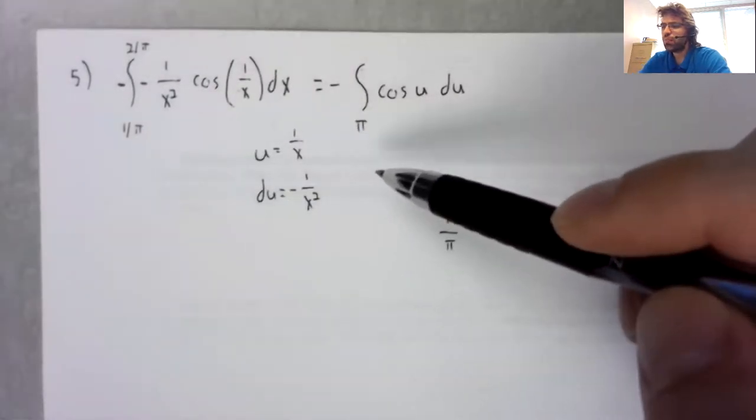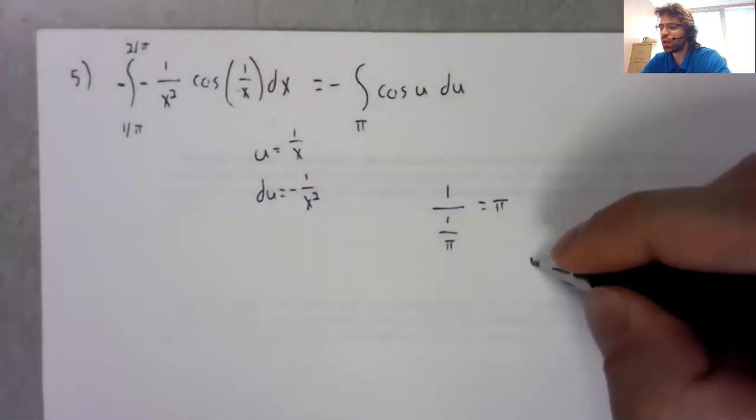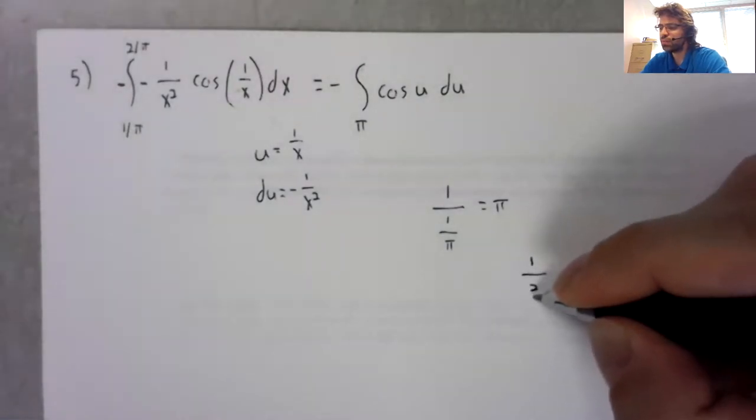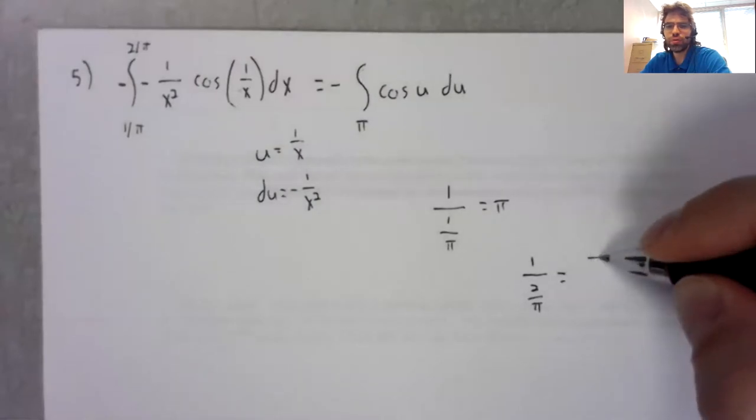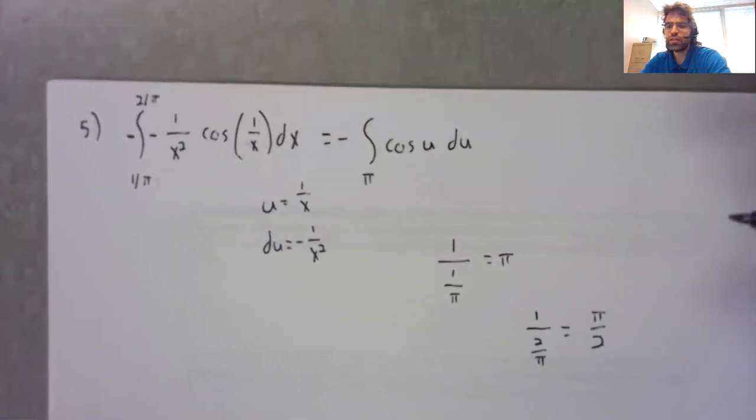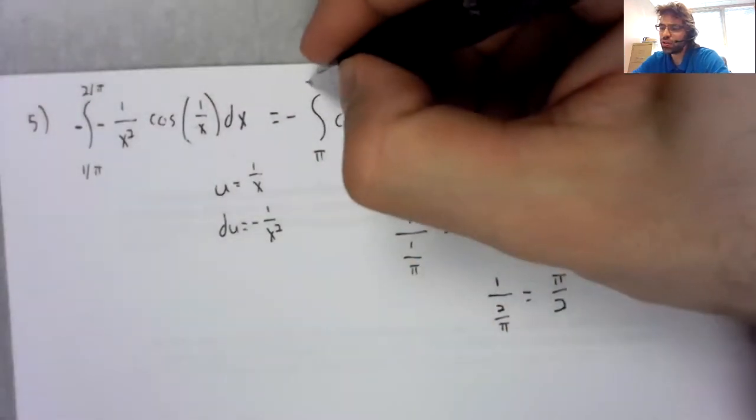And when x is 2 over π, now 1 over 2 over π is π divided by 2.